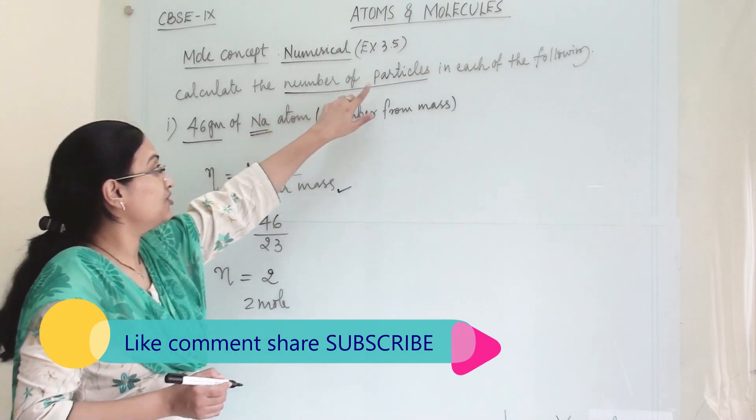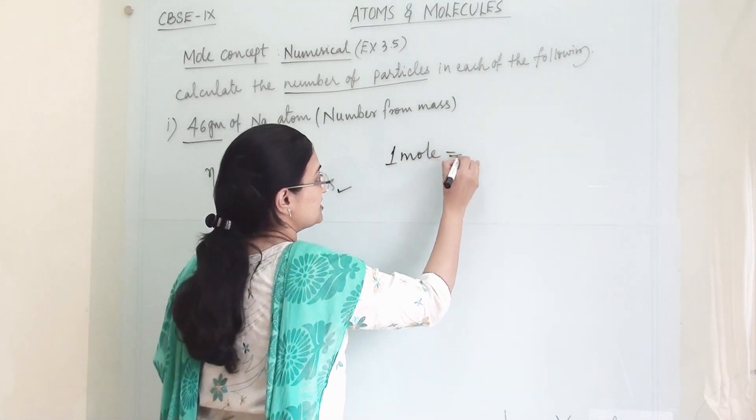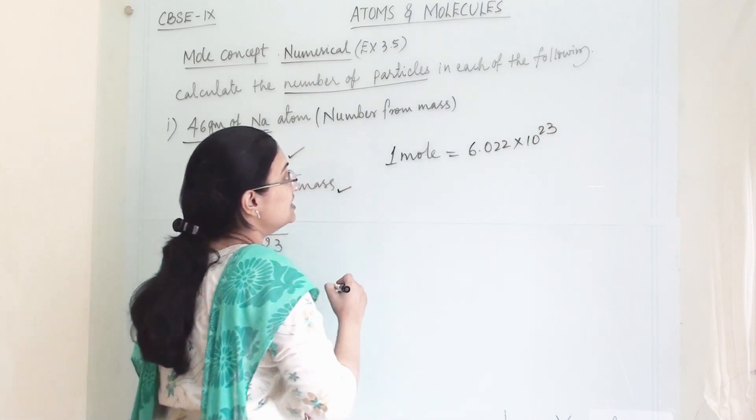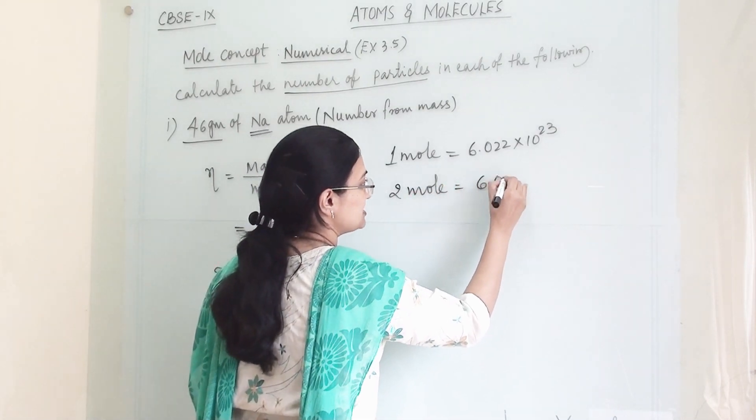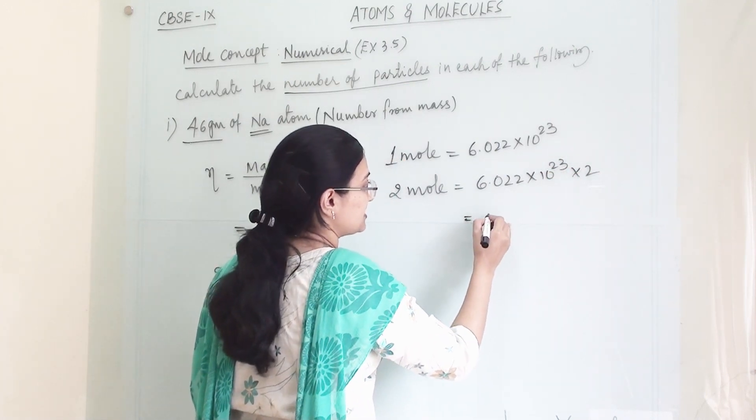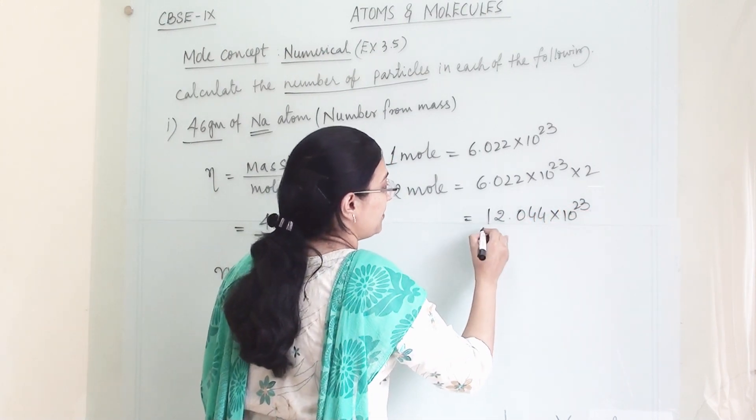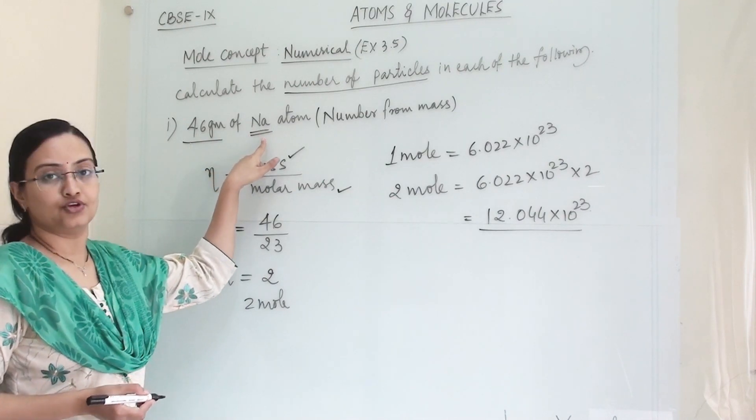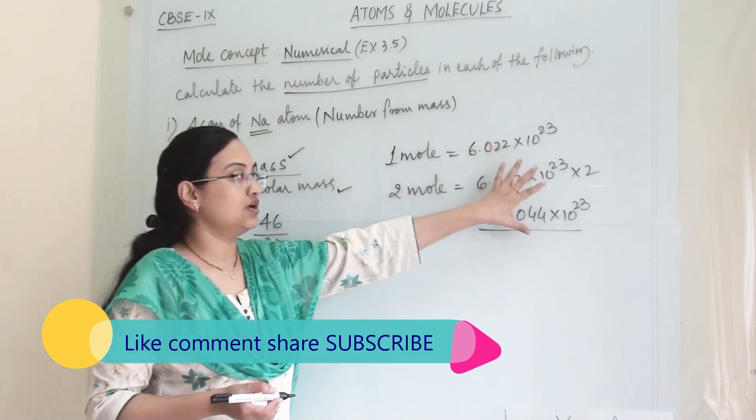Now we have to find out the number of particles. From mole we can find the number of particles. In one mole of substance we have 6.022 × 10^23, so we need to multiply this number with 2. So our answer is 12.044 × 10^23 particles present. This is the number of particles present in 46 gram of sodium. First we found the mole, then from mole we found the number of particles.